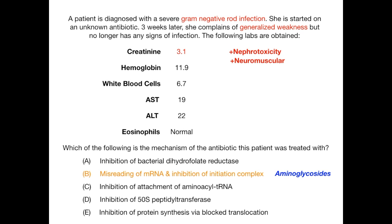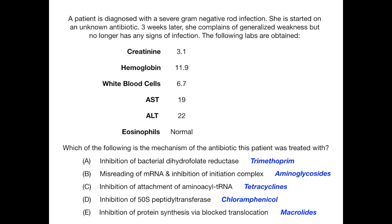Filling in the antibiotics: Choice A — inhibition of bacterial dihydrofolate reductase — is trimethoprim (TMP). Choice C — inhibition of attachment of aminoacyl-tRNA — is tetracyclines. Choice D — inhibition of 50S peptidyl transferase — is chloramphenicol. Choice E — inhibition of protein synthesis via blocked translocation — is macrolides.